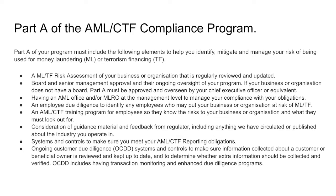Board and senior management approval and their ongoing oversight of the program. Who controls the anti-money laundering function? It's usually the board of directors, depending on the jurisdiction — but in most places, it's the board. They have total oversight and total control of the money laundering program. If the business does not have a board, Part A must be approved and overseen by the chief executive officer or equivalent — so for a private company, it'll be done by the CEO.